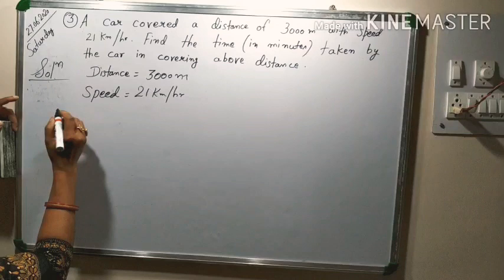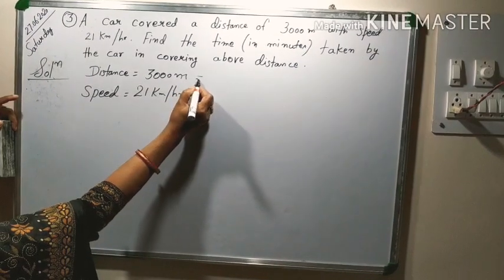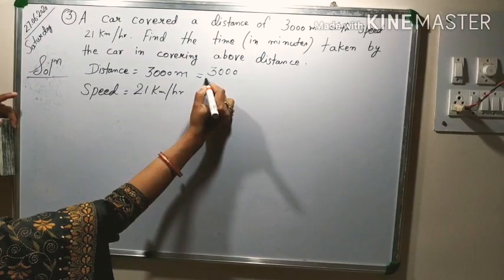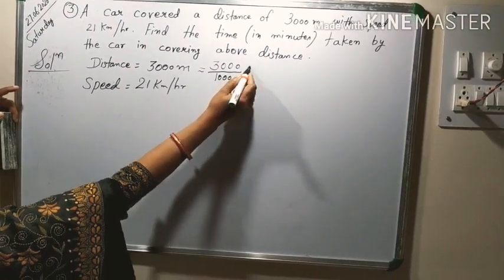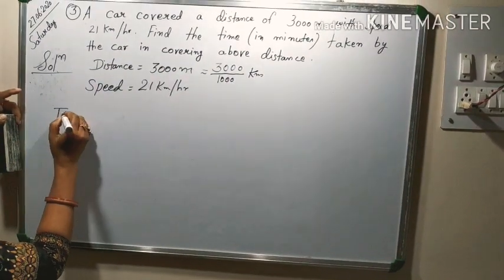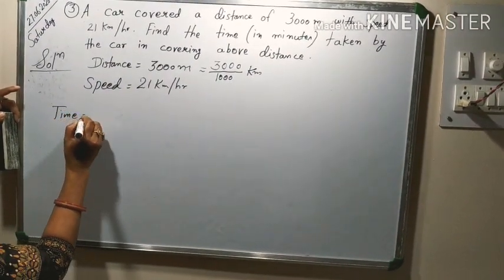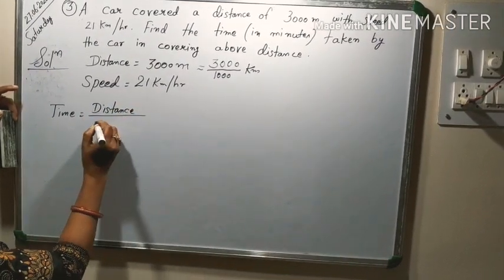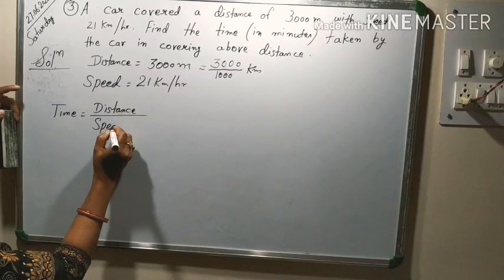So in this, I am changing this distance into kilometer. So it becomes 3000 divided by 1000. Now it is kilometer. Formula for time is time equal to distance by speed.